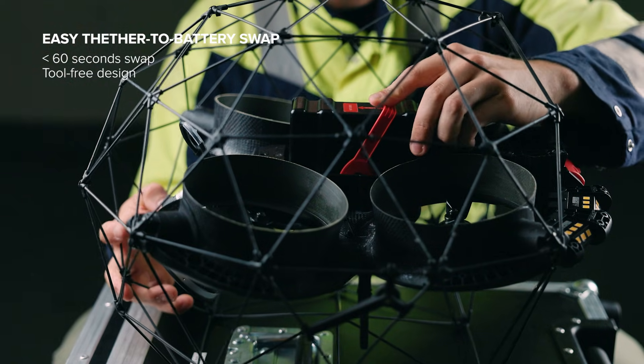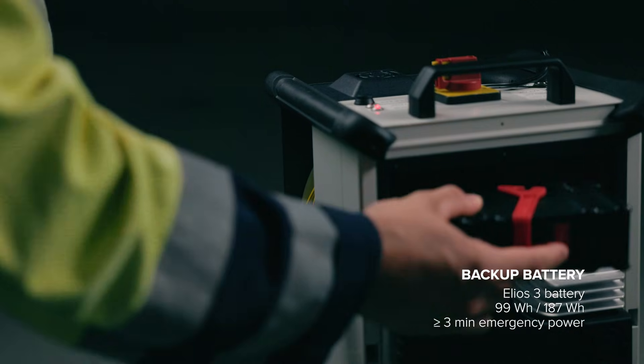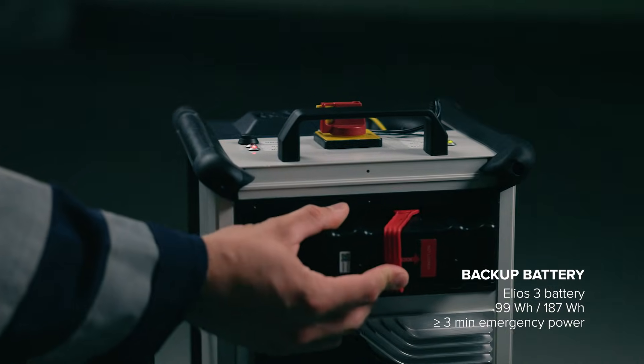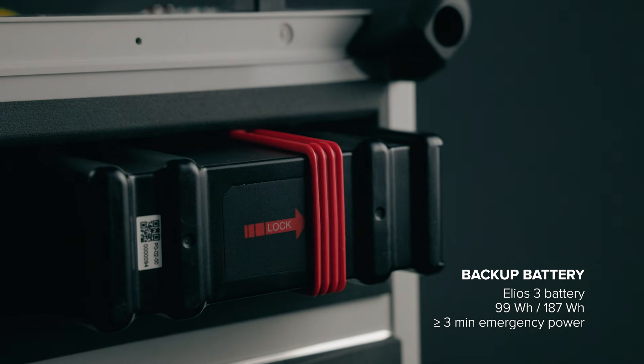Ensuring complete data collection even where the tether can't reach. The backup battery acts as a reserve that automatically supplies enough power to the drone for a safe, controlled landing during unexpected power loss from the energy outlet.